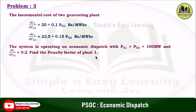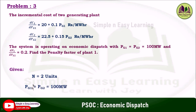In this problem, the incremental transmission loss for plant 2 is given, and the incremental costs for both plants are given. Using this data, we are going to find the penalty factor of plant 1. Given: number of units = 2, PG1 = PG2 = 100 MW, and the incremental transmission loss for plant 2 is 0.2.